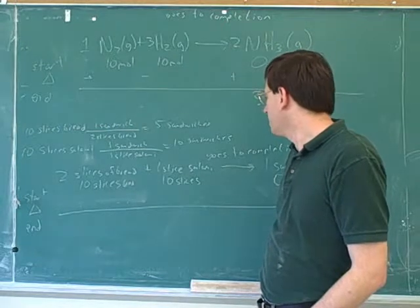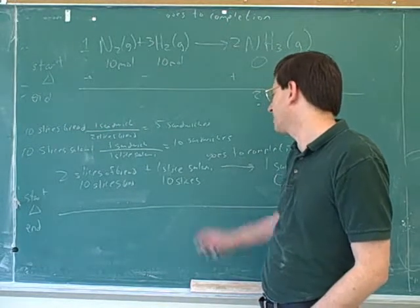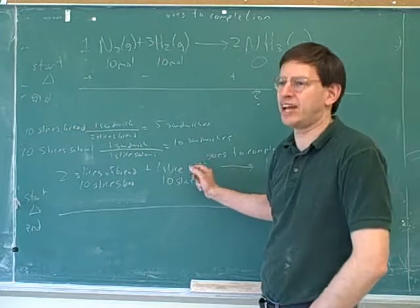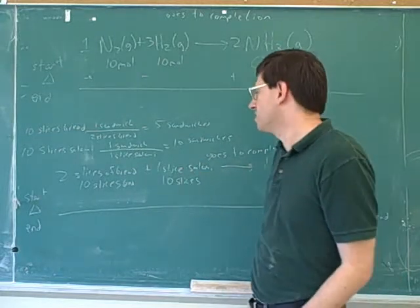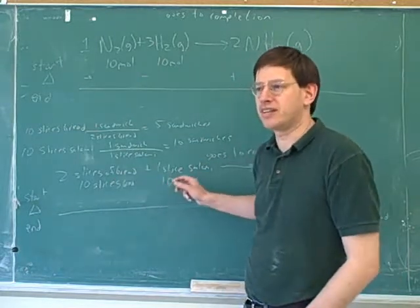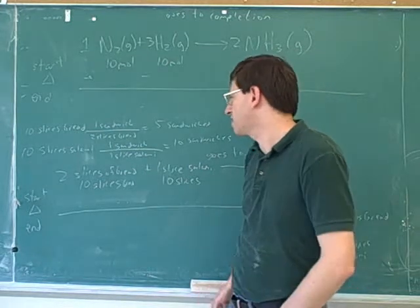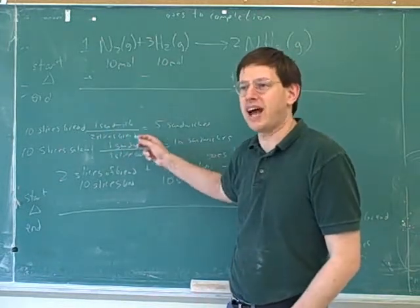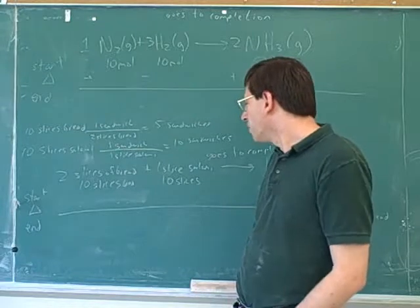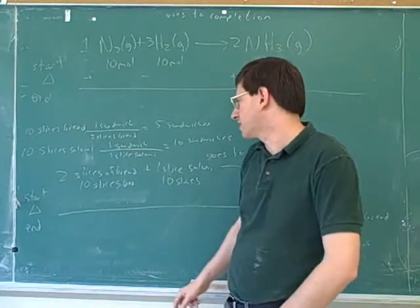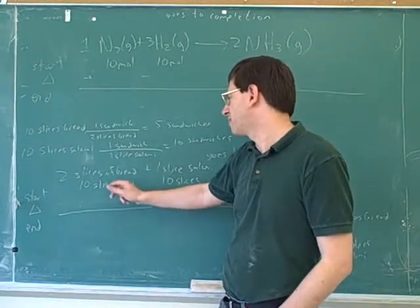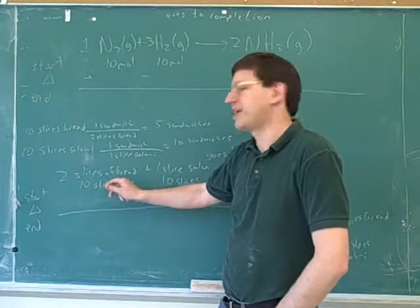So you would look at this and hopefully you wouldn't say to yourself, 'Uh-huh, I got ten slices of salami, so that's ten sandwiches I got coming to me,' because you'd have to realize you'd run out of bread before you ran out of salami in this case. You wouldn't actually have to write down these stoichiometric conversion ratios to work that out usually, right? You'd just say to yourself, well...